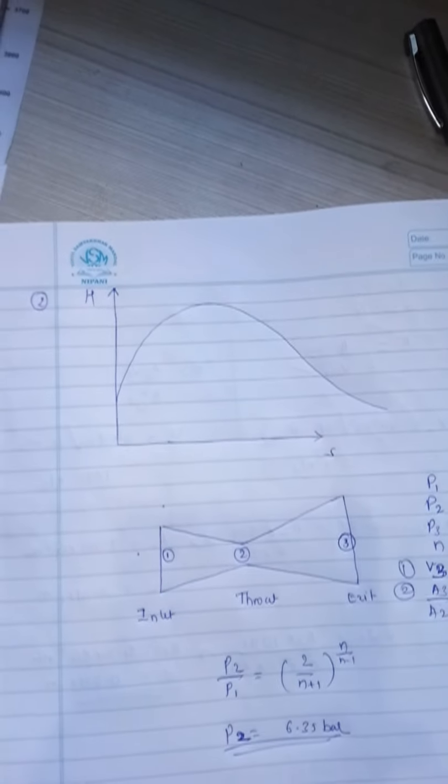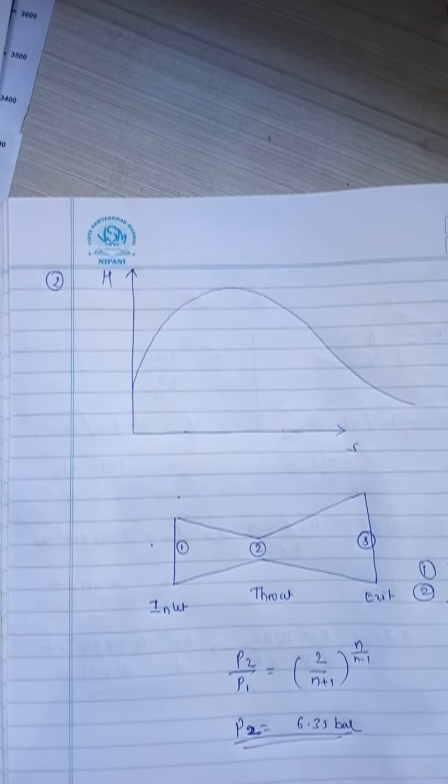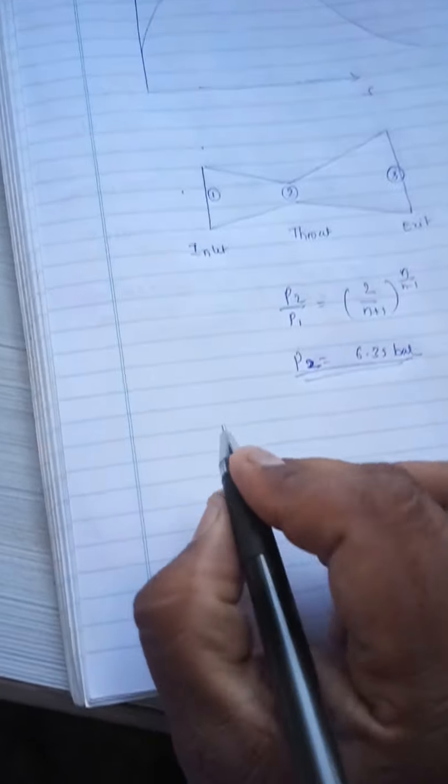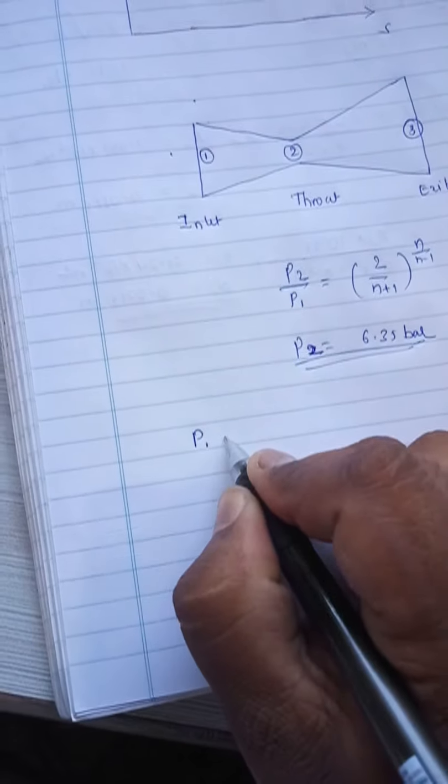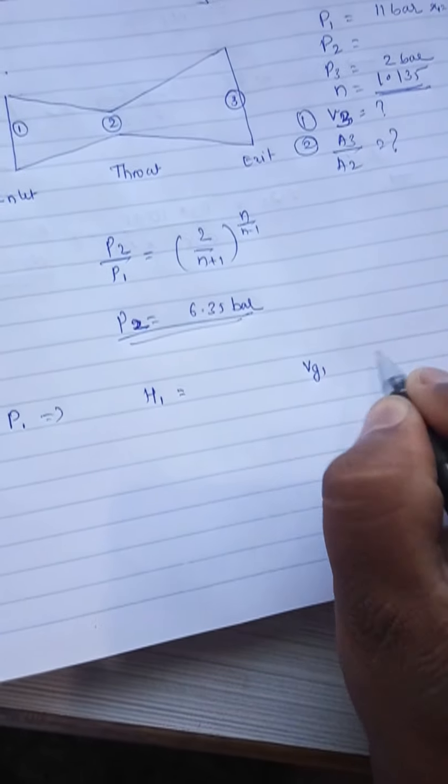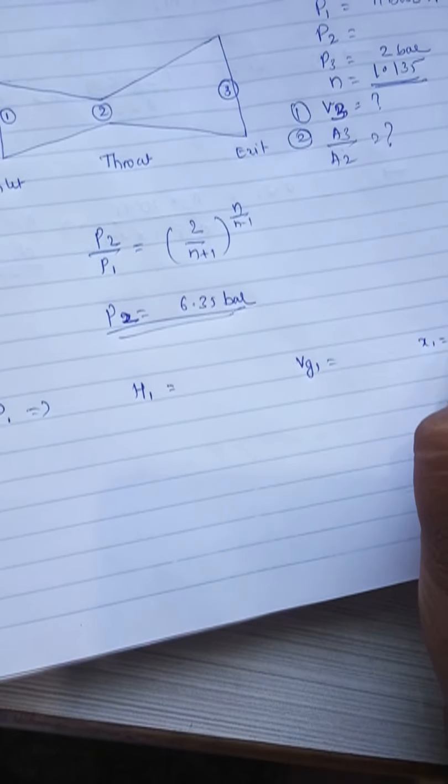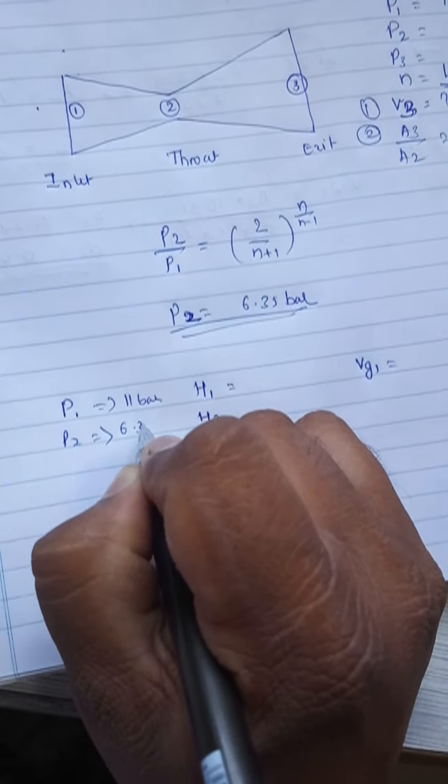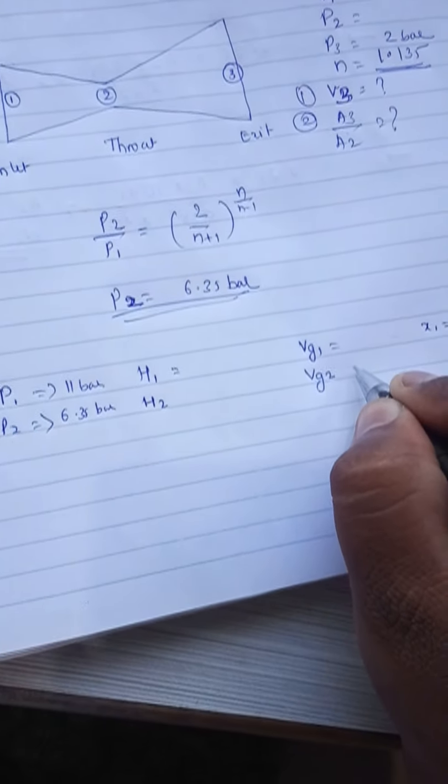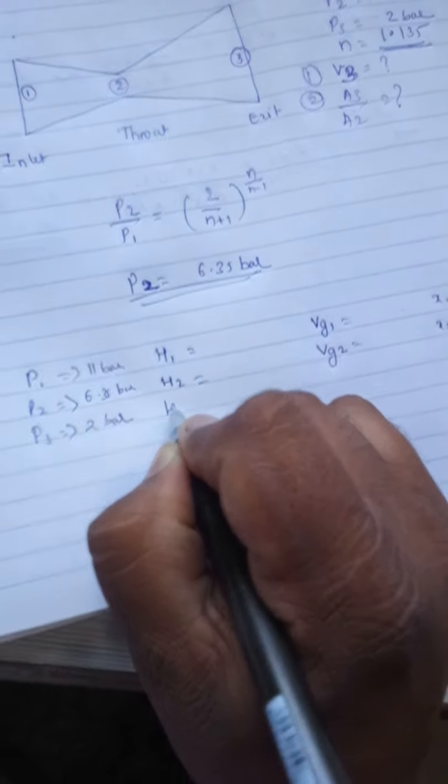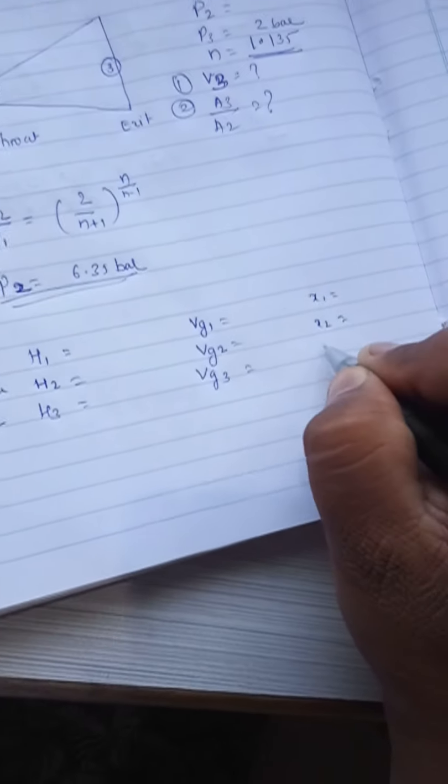Now from the steam tables you need to calculate all these values for H1, H2, H3 values and VZ2, VZ3, X2, X3 all these things. Now I will just put it: at pressure P1 I need to find out H1 and VZ1 and X1. From pressure P2, this is 11 bar, this is 6.35 bar, I should find out H2, VZ2, and X2. And P3 is 2 bar, I need to find out H3, VZ3, and X3.